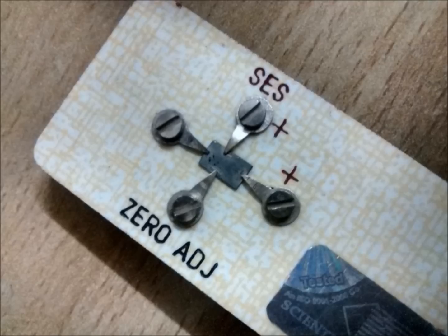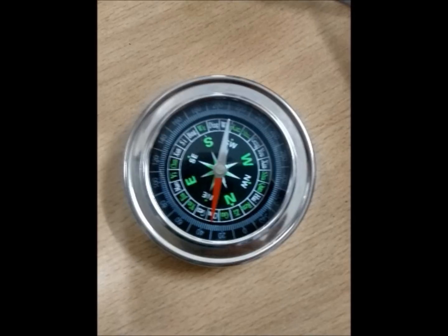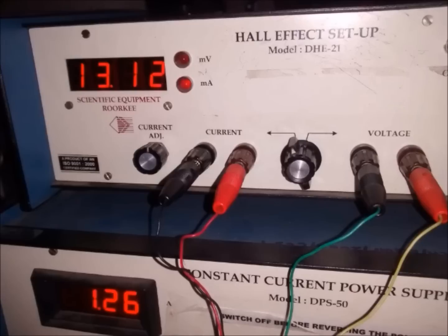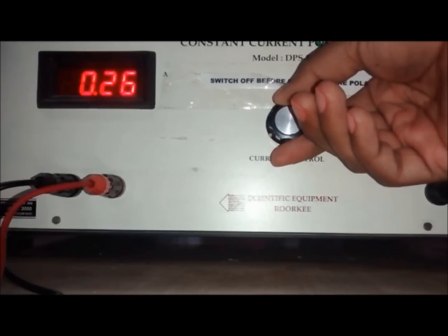This is the extrinsic semiconducting sample. This is the compass to find the direction of magnetic field. This is the Hall effect setup unit which measures current and voltage across the extrinsic semiconducting sample. This is the constant current power supply source.